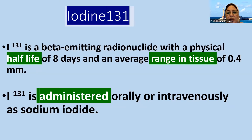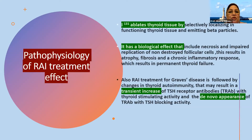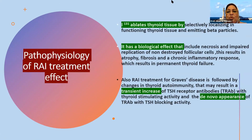It is administered either orally or intravenously as sodium iodine. From the pathophysiological effect of radioactive iodine, it is selectively localized in the functioning thyroid tissue where it ablates these tissues by emitting beta particles. It also has a biological effect that includes necrosis and impaired replication of non-destroyed follicular cells. This results in atrophy, fibrosis, and chronic inflammatory response, which results in permanent thyroid failure.